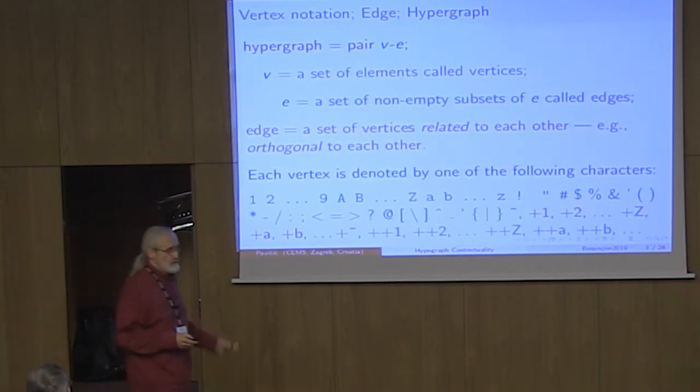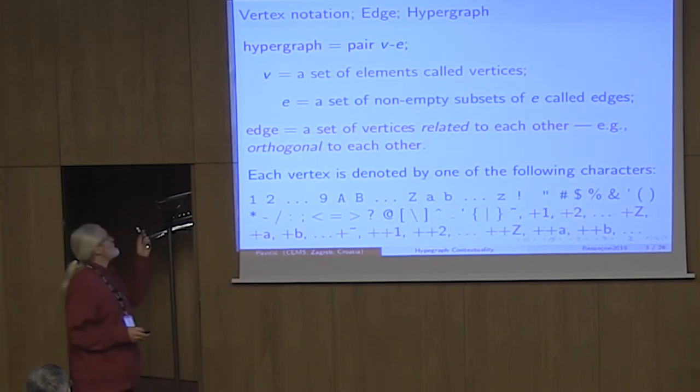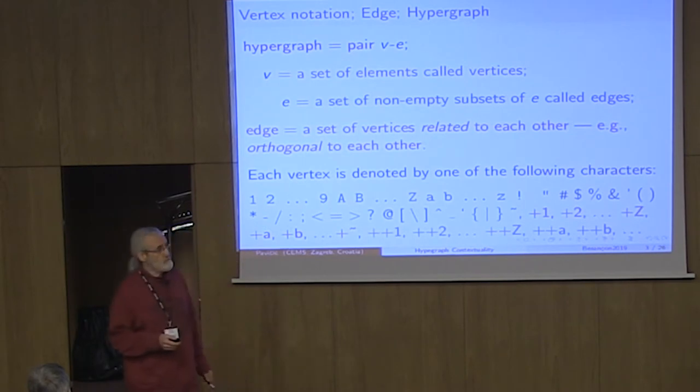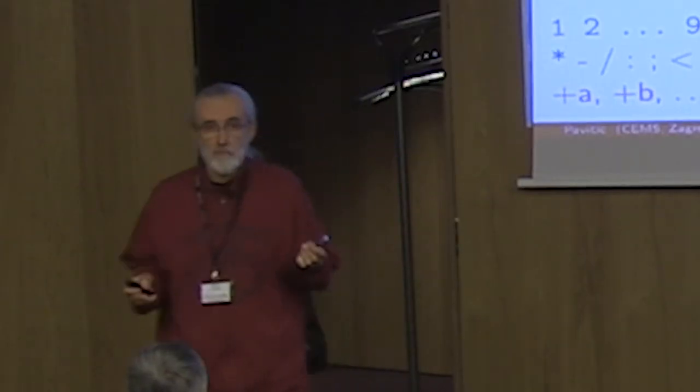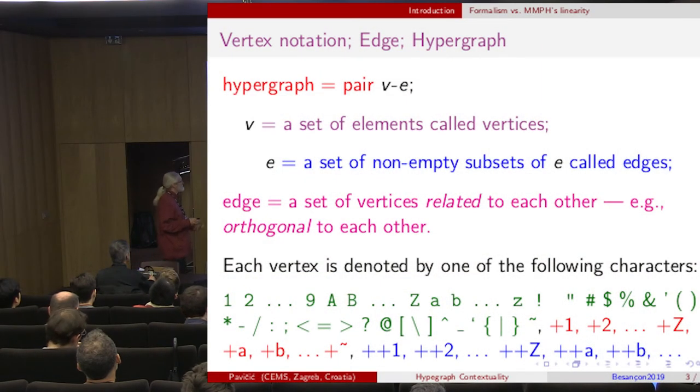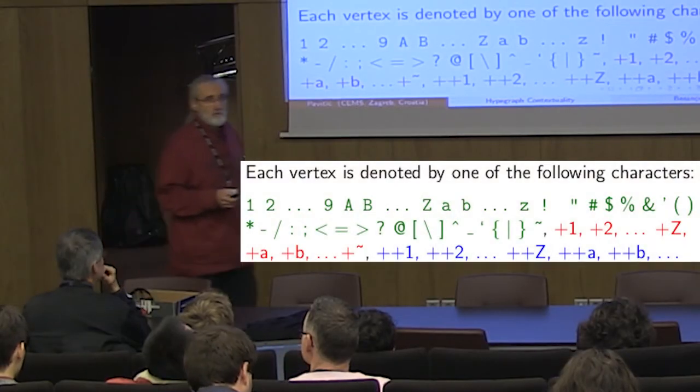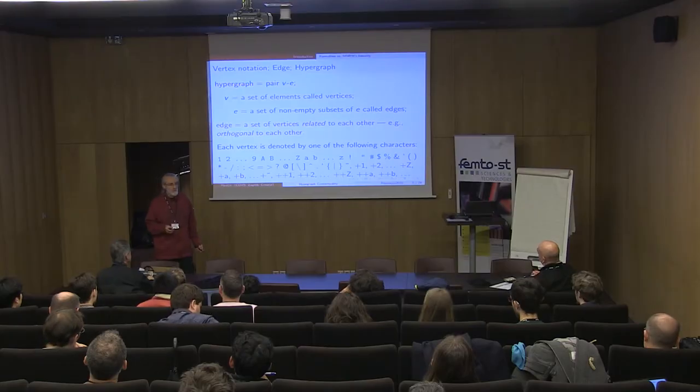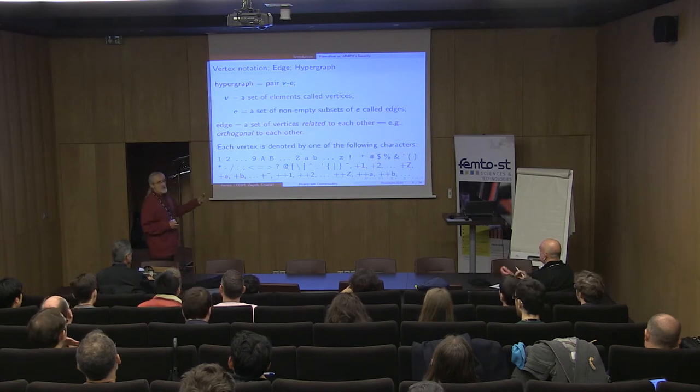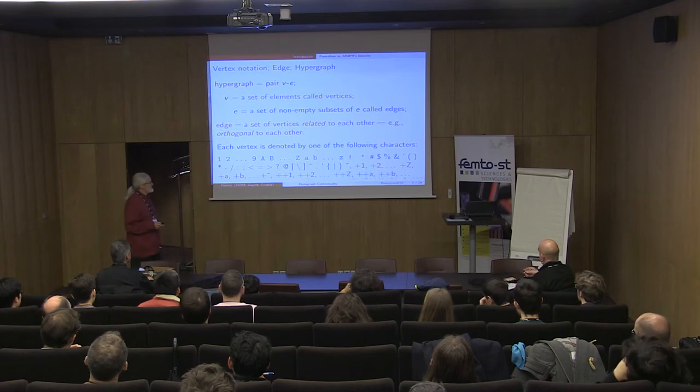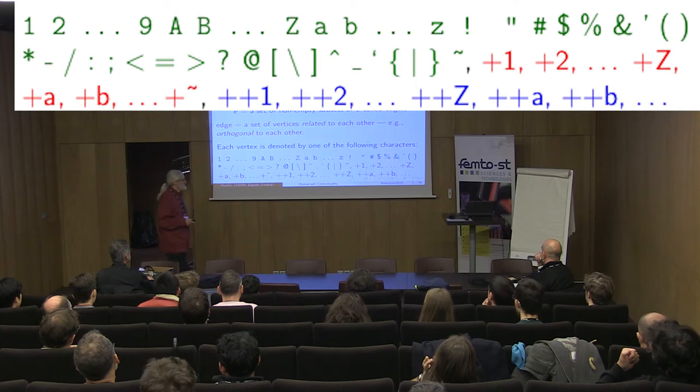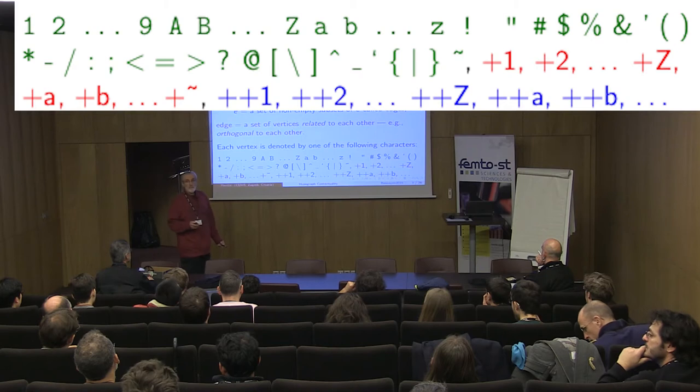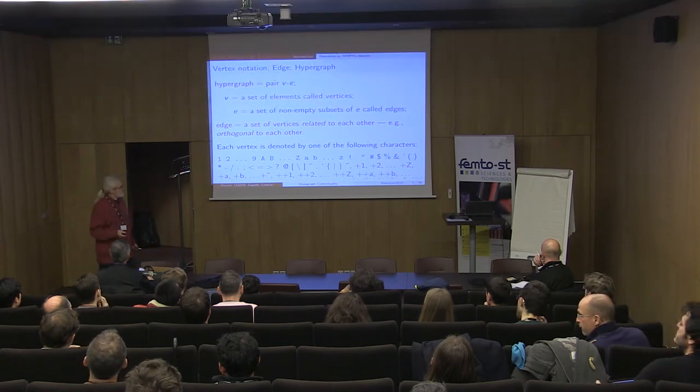A hypergraph is a pair VE, where V is a set of elements called vertices, and E is a set of non-empty subsets of itself called edges. Each vertex is denoted by one of the ASCII characters, with the exception of 0, and the sine plus has a special role to enable repeating such a string when we have many vertices. When we exhaust all ASCII characters, we continue with the same ASCII characters preceded by sine plus, and two pluses, and so on ad infinitum, because our programs have no limitations on the number of vertices.